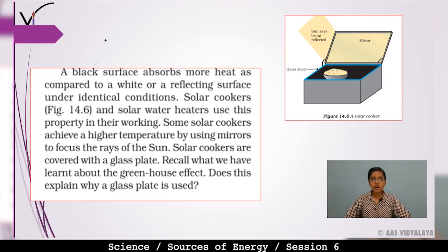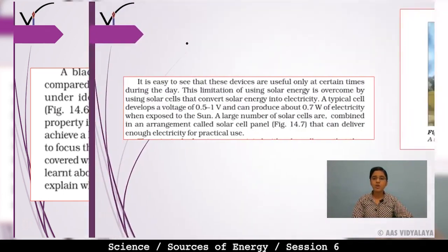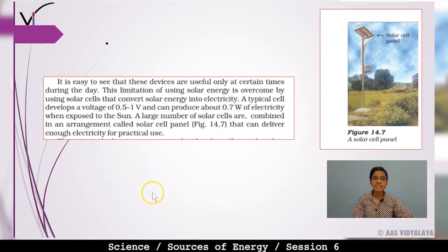When the solar cooker is covered with a glass plate, the sun's rays converge through the glass and the food inside receives high temperature, due to which it gets cooked. It is easy to see that these devices can be used only at certain times during the day.